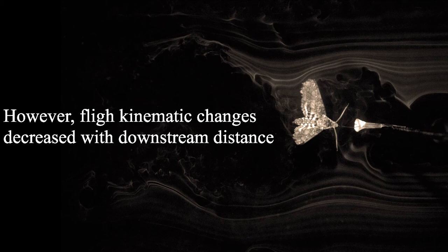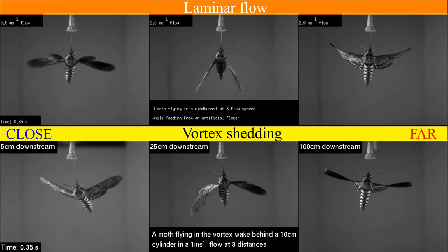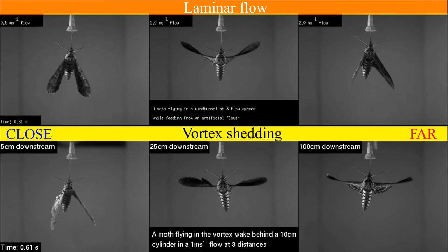Vortices lose cohesion and strength the farther they travel from their source of energy. So, as expected, and as you can see in this video, flight kinematic changes were reduced the farther the moth flew from the vortex source. The mollifying effect distance had on body oscillation amplitude was particularly pronounced in the case of the larger vortices.